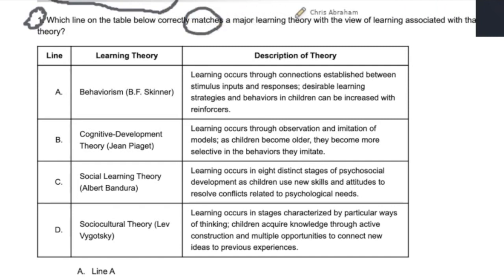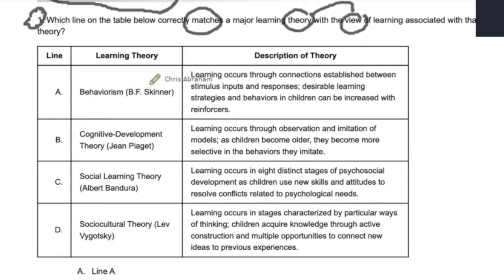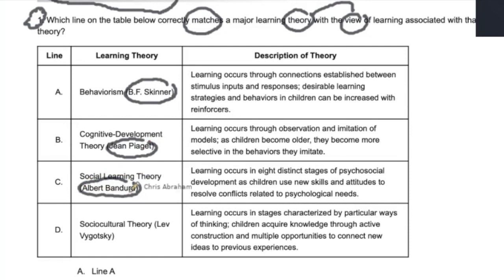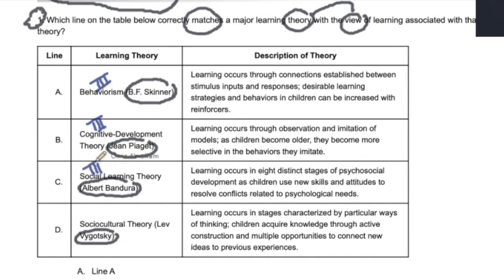We're going to do some matching of a theory with the correct view of that theory. We have answer choices A, B, C, D, with major theories and theorists. I'm going to circle the theorists here: Skinner, Piaget, Bandura, Vygotsky. Each one of these theorists is connected to a major theory. Each one of these theories is a tier-three idea — a tier-three vocabulary word — which means you want to go back and clarify what exactly was that theory or who exactly was that theorist. Make sure you're very confident on the theories as well as the theorists.